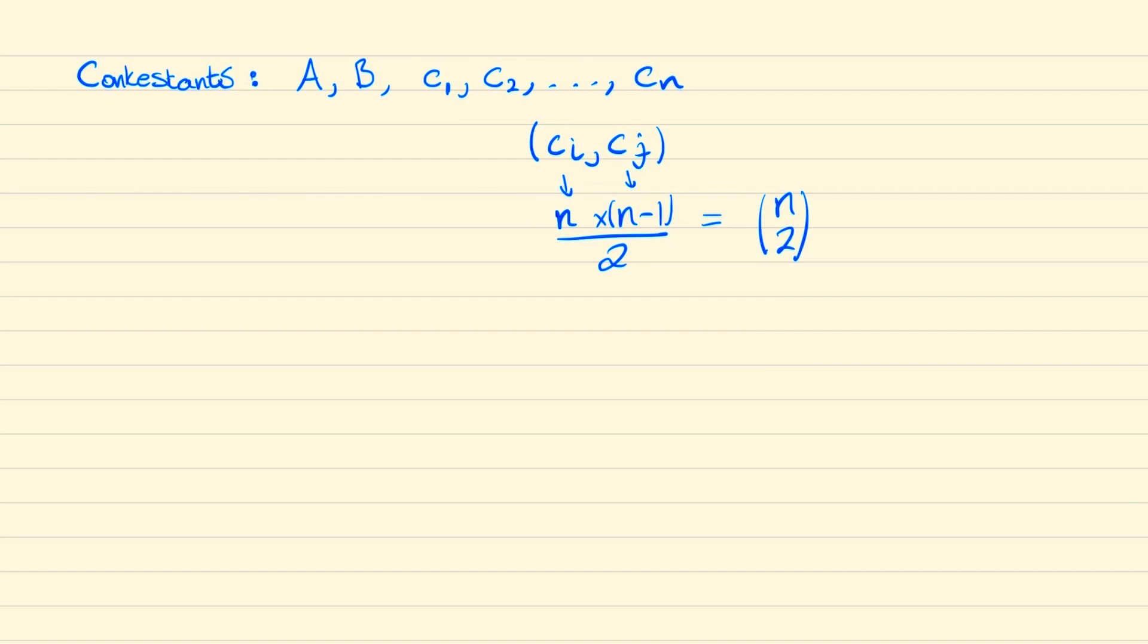If we start by looking at when A does not play B, then the total number of games played would be n times n minus one over two, plus the 10 games played by A, plus the one game played by B, which will make a total of 55. Simplifying this, we show that n times n minus one is equal to 88, but this has no positive integer solutions.